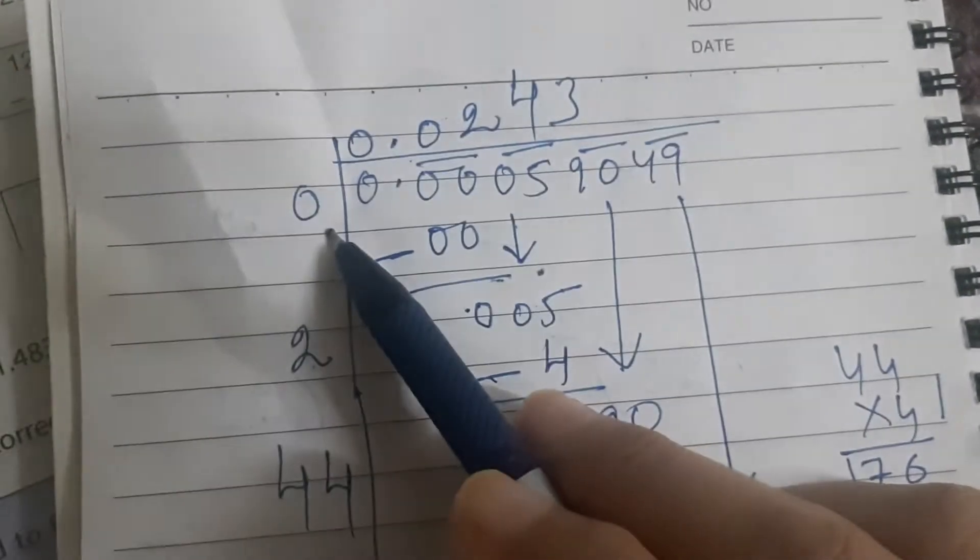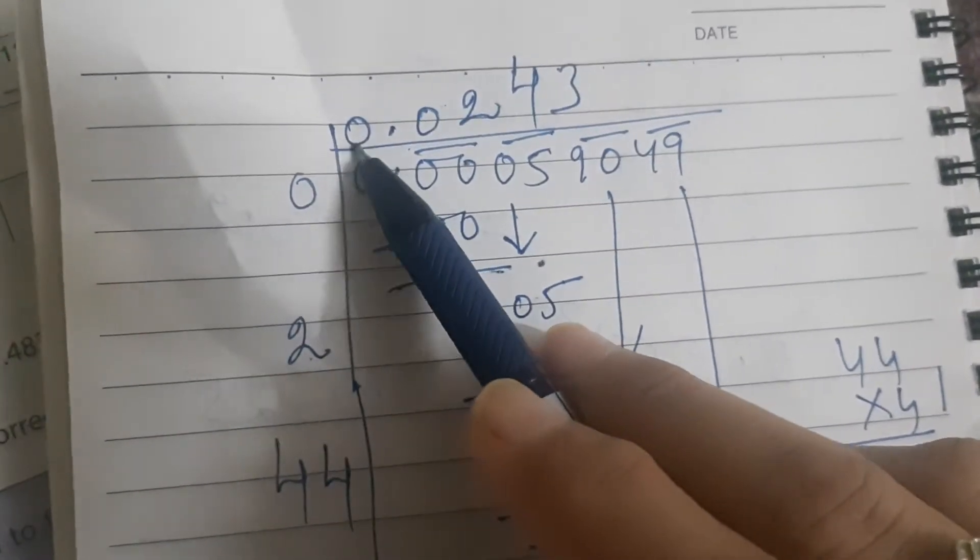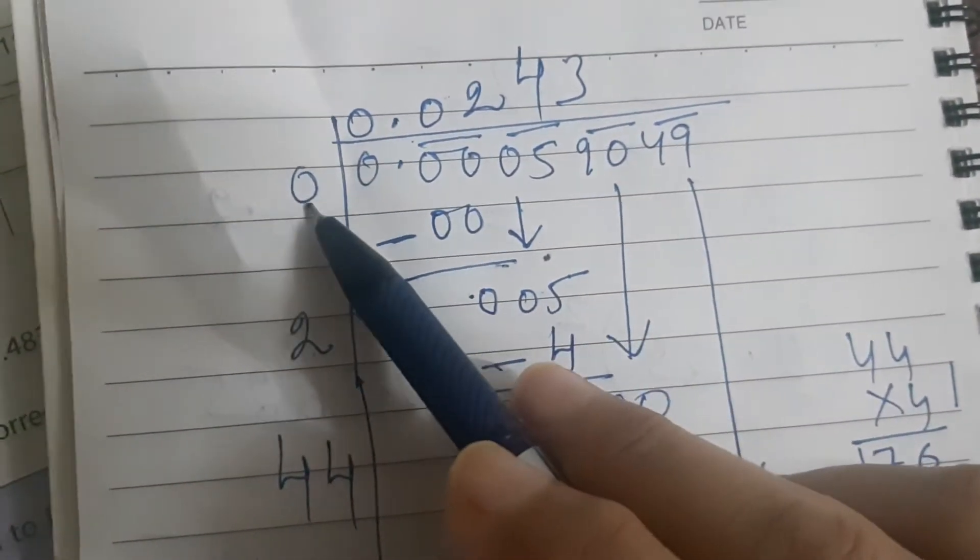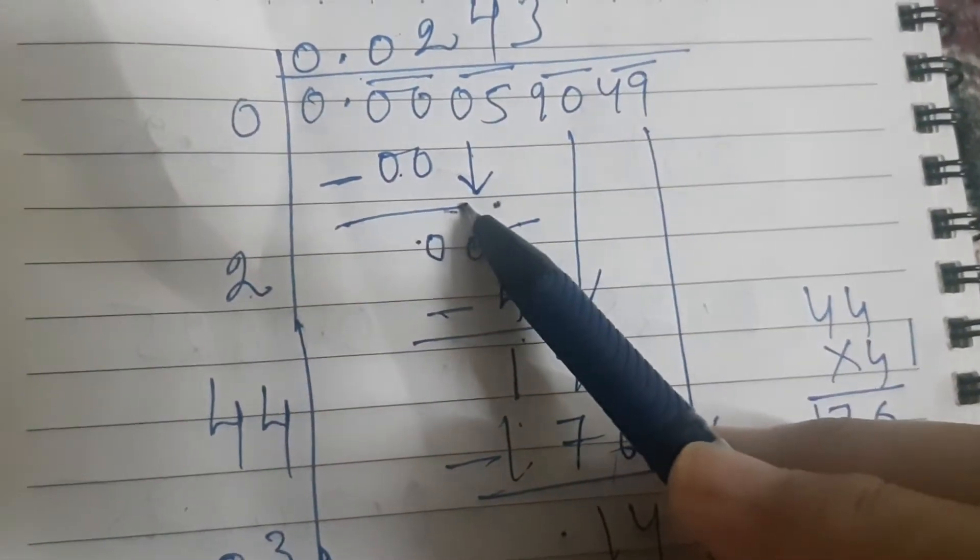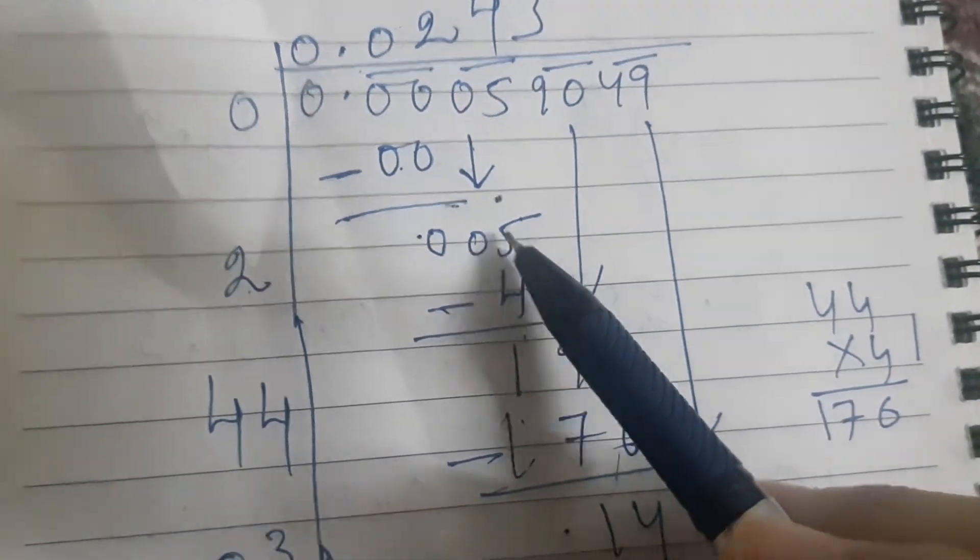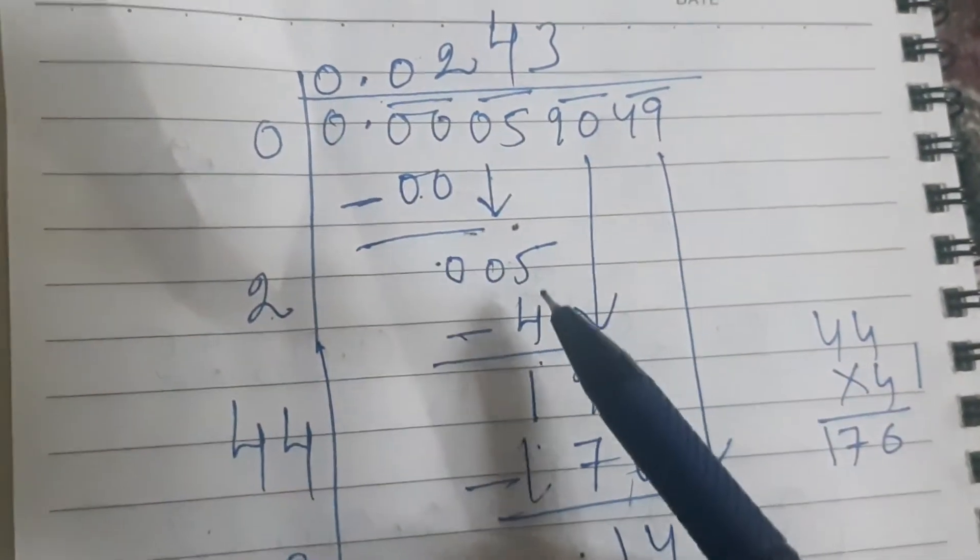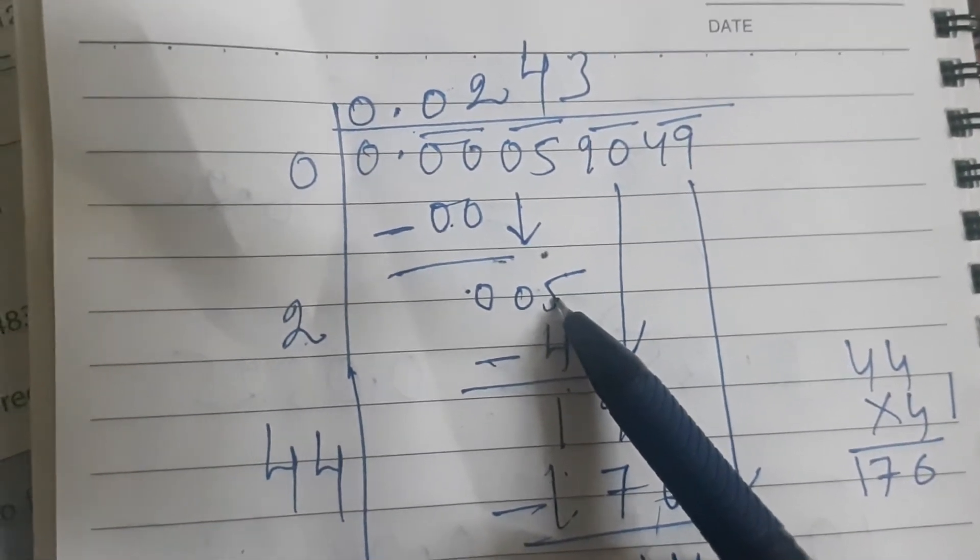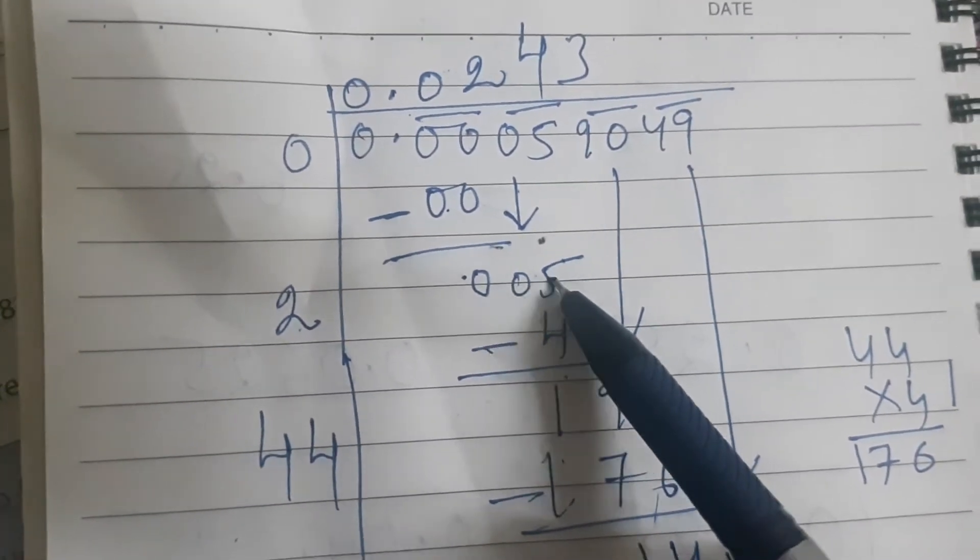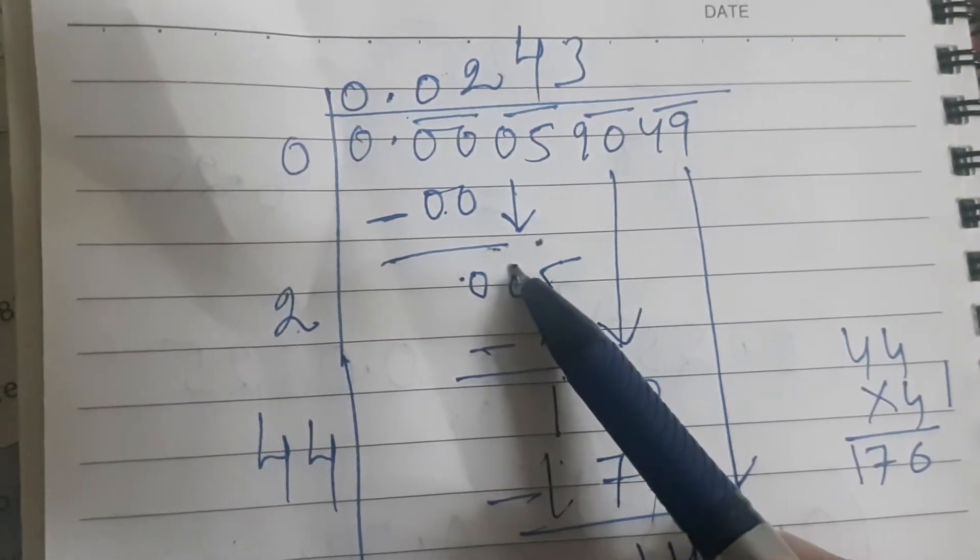So I am beginning the process. So I am writing here 0 point. Now 0 times 0 is 0. So 0 minus 0, we get 0. Now copy down the next period, which is 05. Now we have to look for a number whose square is less than or equal to 05.